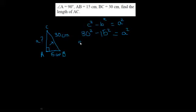30 squared is 900. And 15 squared, so 15 times 15 is 225. When you subtract those, you get 675.